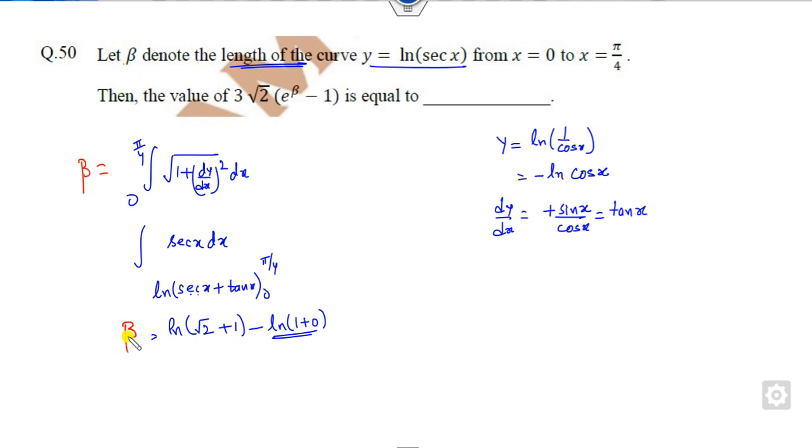If you take e^β, it will be √2 + 1. This part is 0, so e^β - 1 equals √2. If you substitute the value here, the answer is 6, which is the required answer. That's a very simple term.